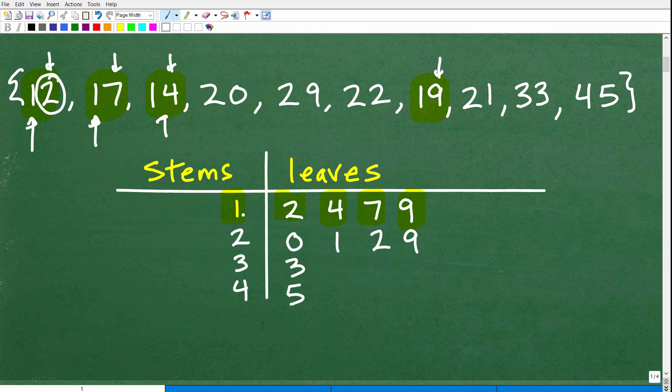So you can kind of read this. If we want to reconstruct the numbers here, well, this is saying we have the number 12, 14, 17, and 19.